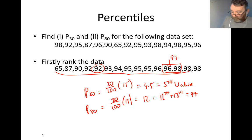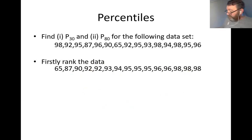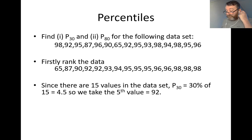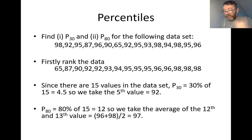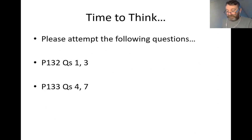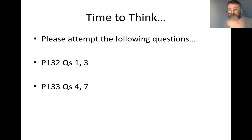So to summarise: since there are 15 values, P30 is 30% of 15 = 4.5, so take the fifth value, which is 92. P80 is 80% of 15 = 12, so take the average of the 12th and 13th values: (96 + 98) ÷ 2 = 97. Work through practice questions on pages 132 and 133, questions 134 and 7, working on percentiles.